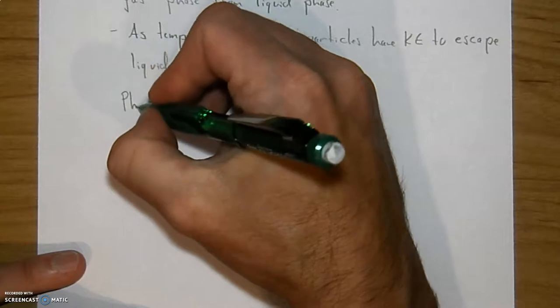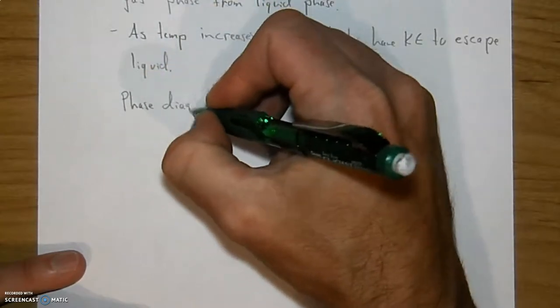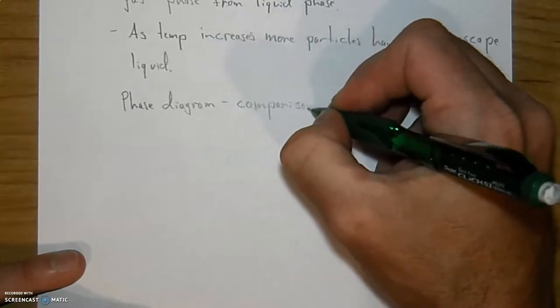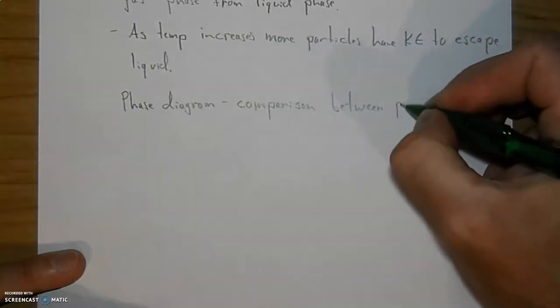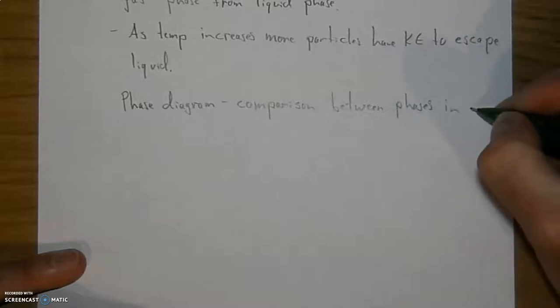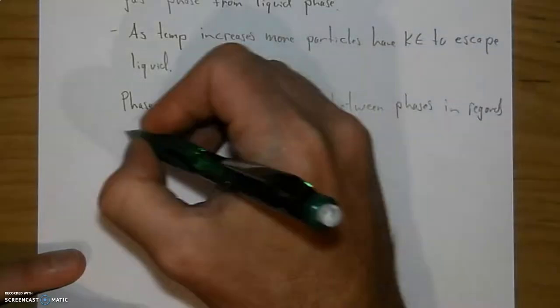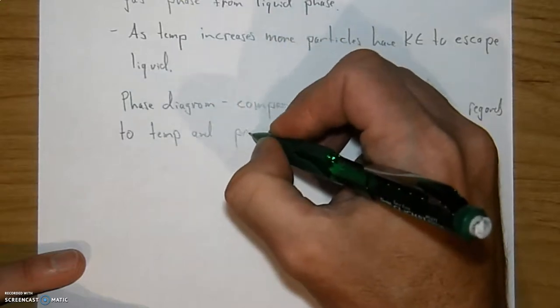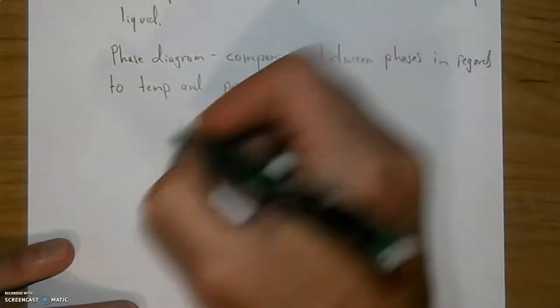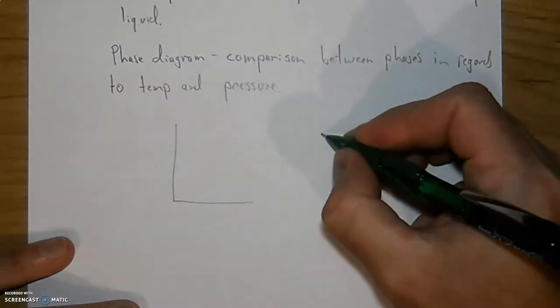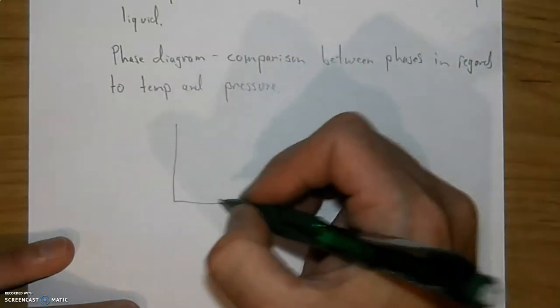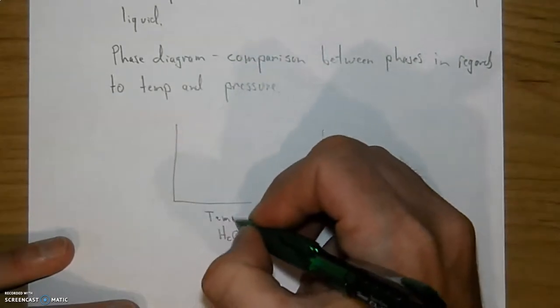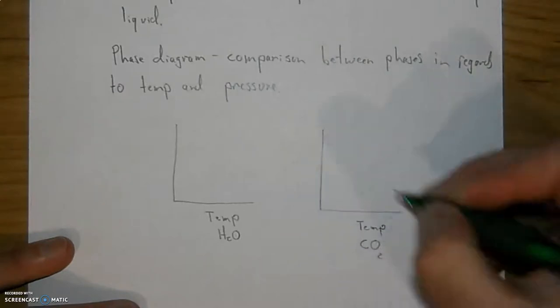What is a phase diagram? Well, a phase diagram is a comparison between phases, go figure, different phases in regards to temperature and pressure. All right, let's do two different ones here. We'll put H2O over here and we'll put CO2 over here. And we're going to say as we add energy or raise the temperature in comparison to the pressure.